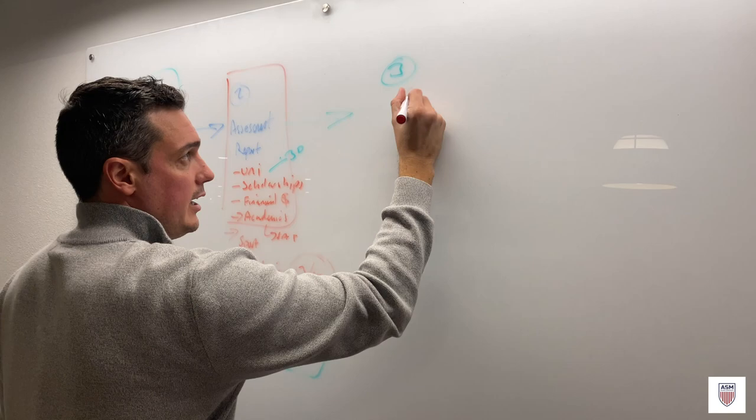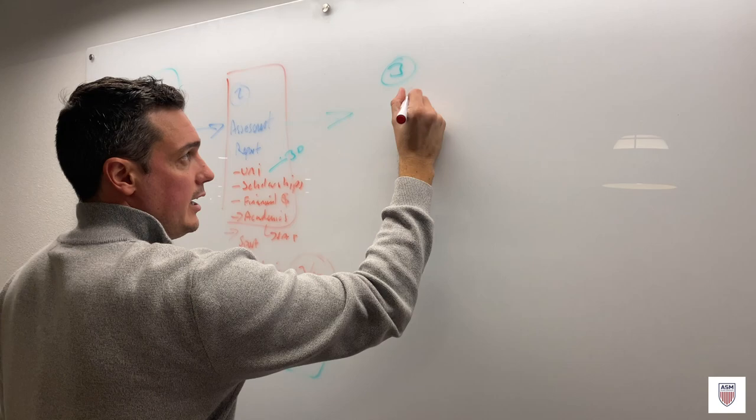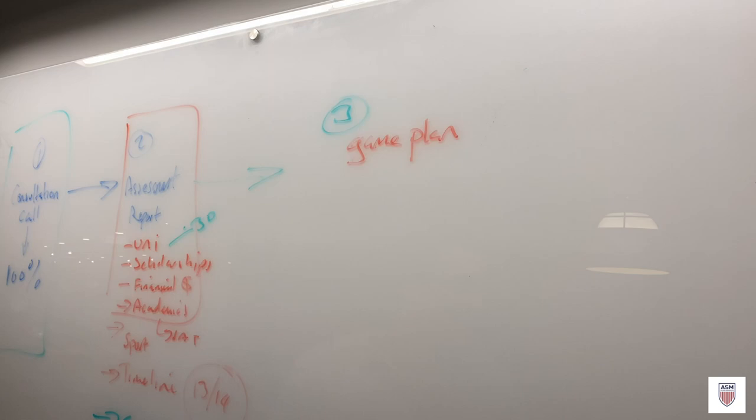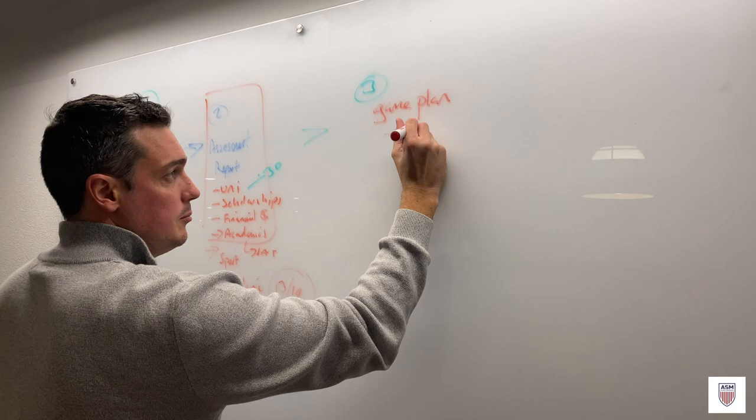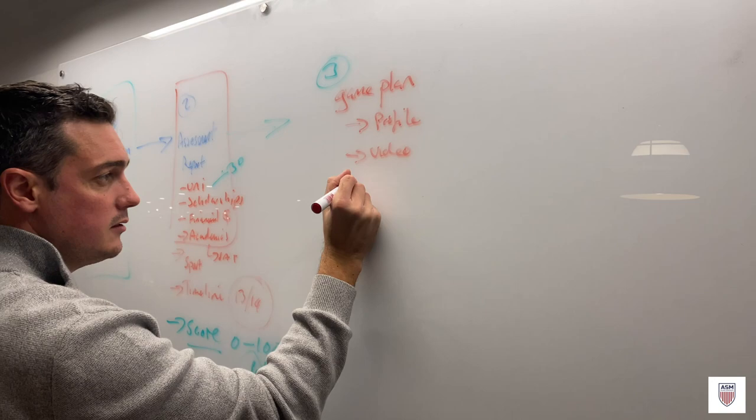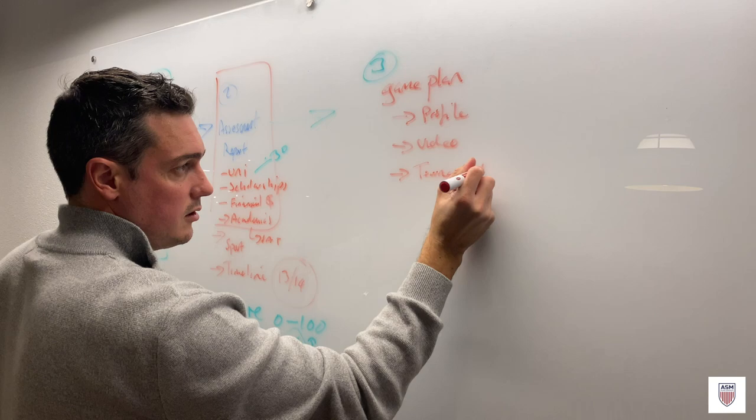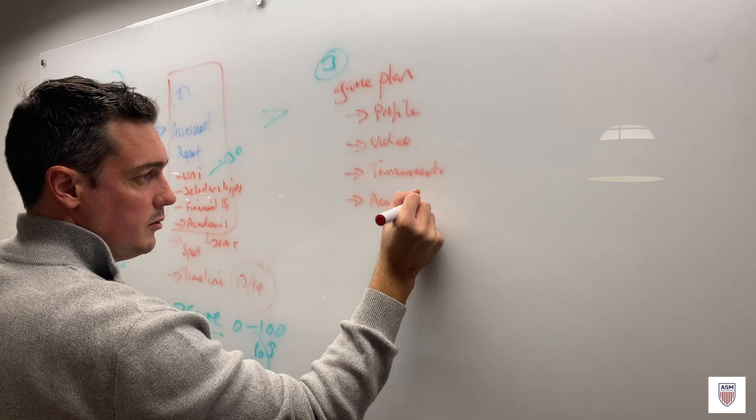So that basically then becomes starting your game plan. We really have to get some better pens. So game plan, that's going to then be activating your timeline. That's going to be the first stage of that, building your profile, your video, that's where the fun starts. Looking at your schedule, your tournaments, making sure you're playing the right stuff, and your education, academics, your SAT planning, doing your clearinghouse.